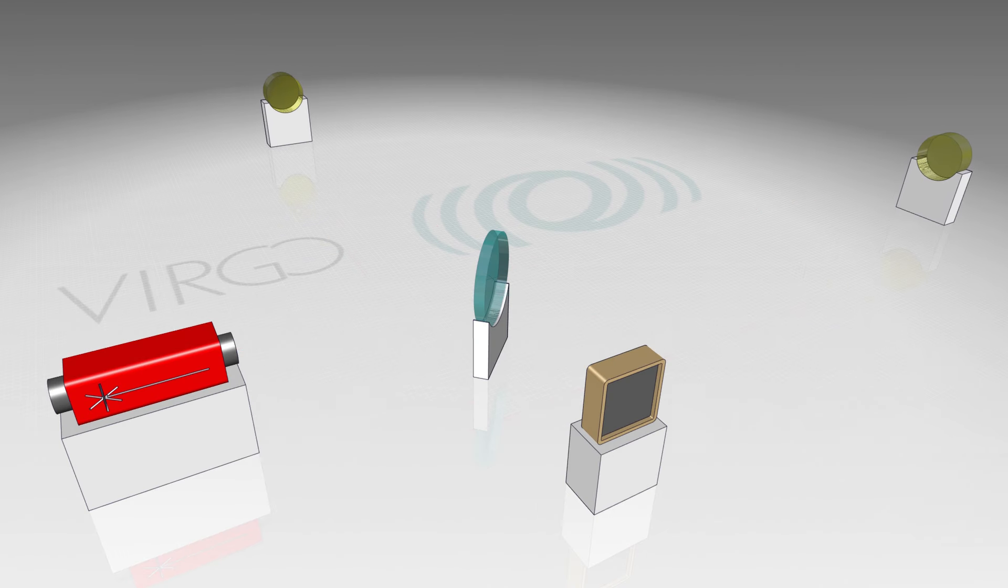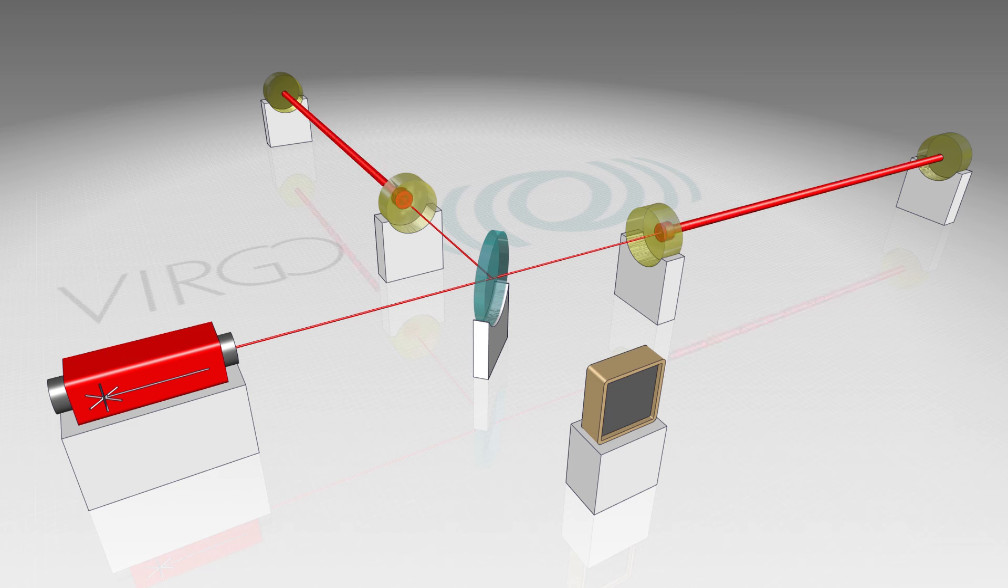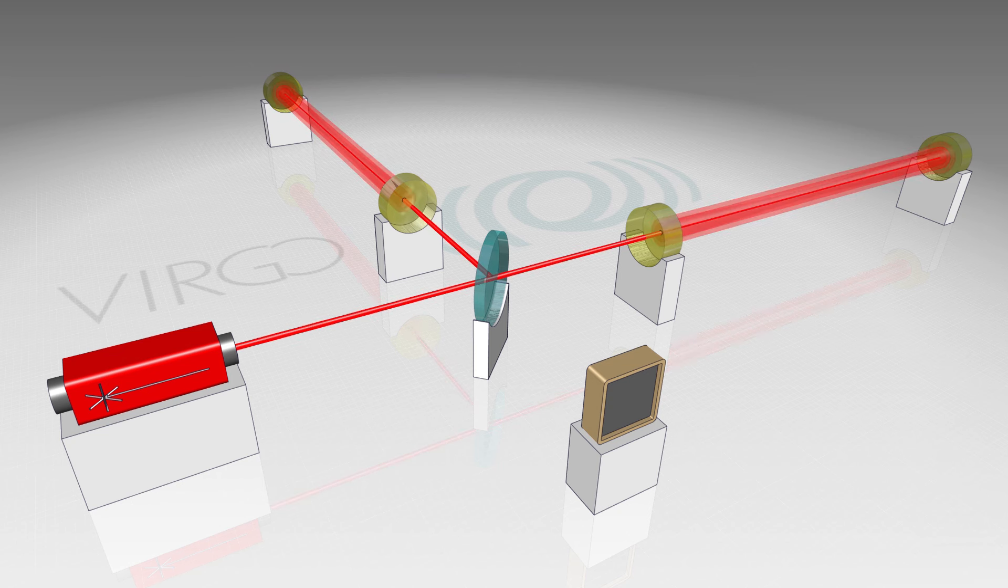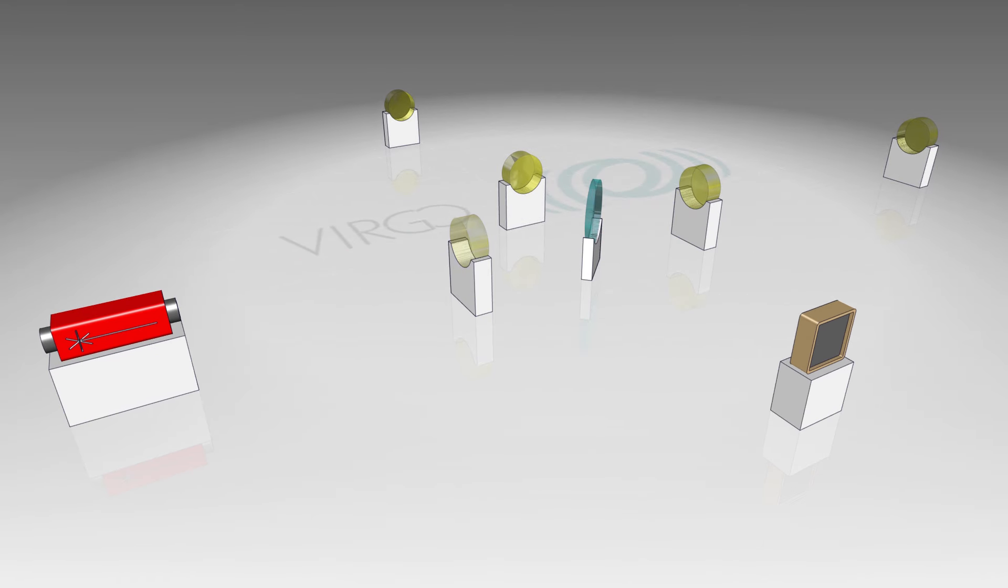Now we add an extra mirror in both beams. In this configuration the beams bounce hundreds of times back and forth between two mirrors before returning to the beam splitter. The intensity of the light in these so-called Fabri-Perot cavities increases substantially. The cavities boost the interference effect a few hundred times.